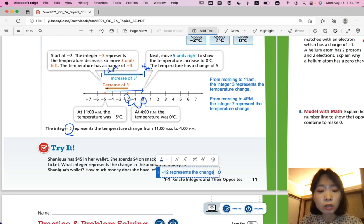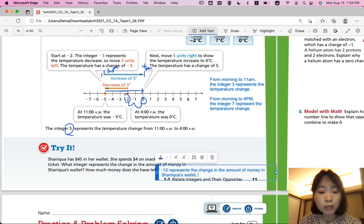How much money does she have left? So from $45 if you subtract $45 minus $12 is equal to $33. Shanika has $33 left in her wallet.